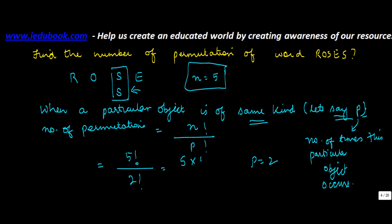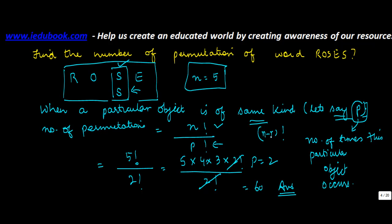So what it says is that if in certain given objects, any particular object, let's call that object p, repeats itself, then the permutation instead of the normal formula changes from that to factorial n, which remains the same. The denominator, instead of n minus r factorial, changes to p factorial, where p is the number of times this object repeats itself.